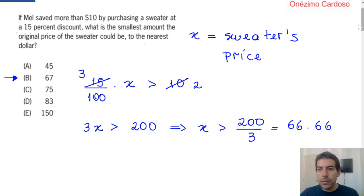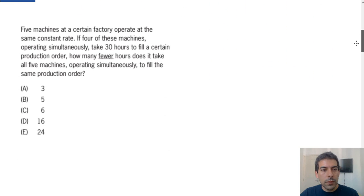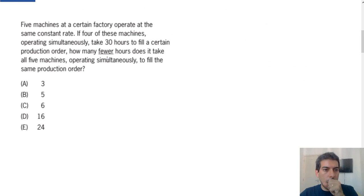Let's go to the second one. In this question, five machines at a certain factory operate at the same constant rate. If four of these machines operating simultaneously take 30 hours to fill a certain production order, how many fewer hours does it take all five machines operating simultaneously to fill the same production order?